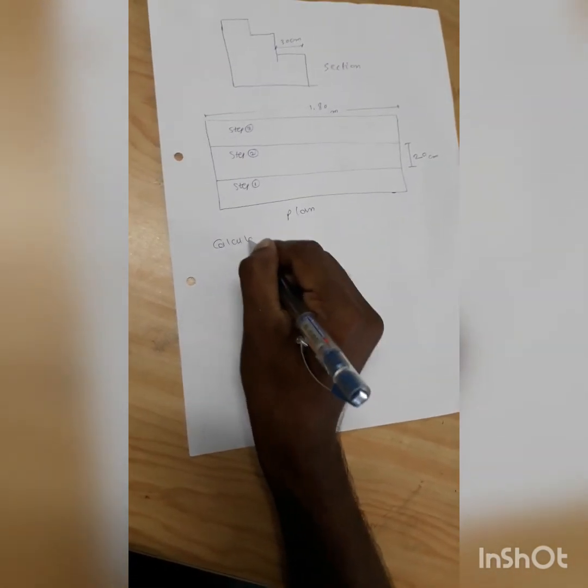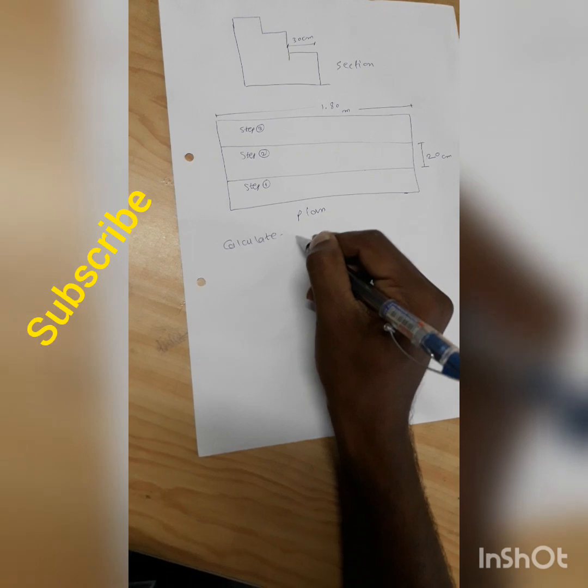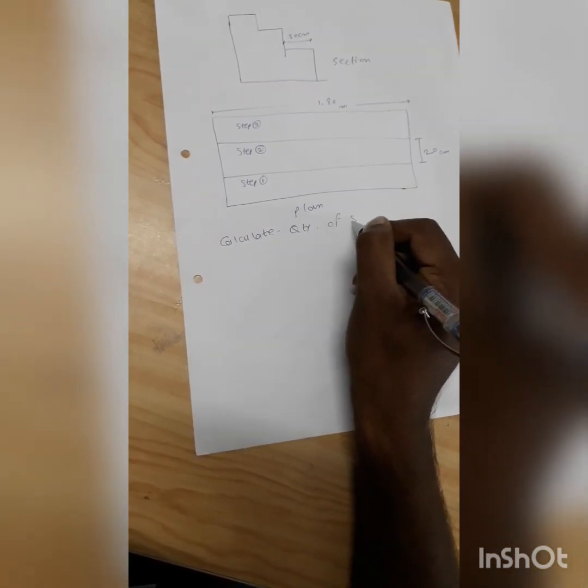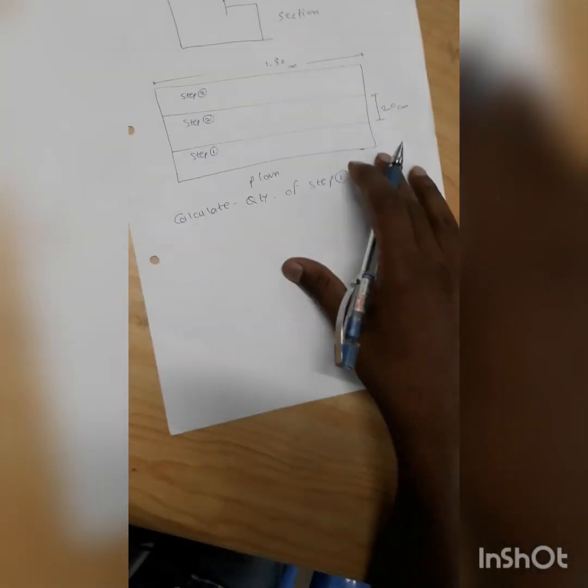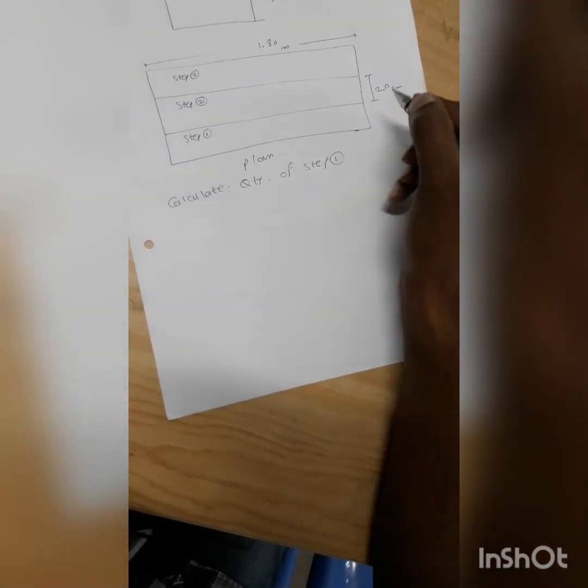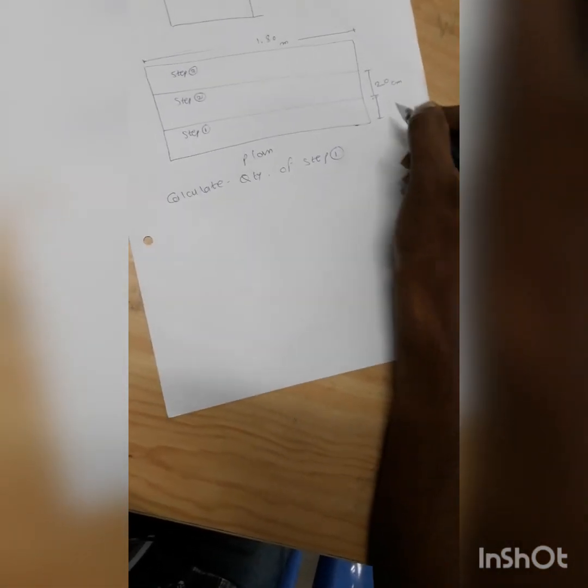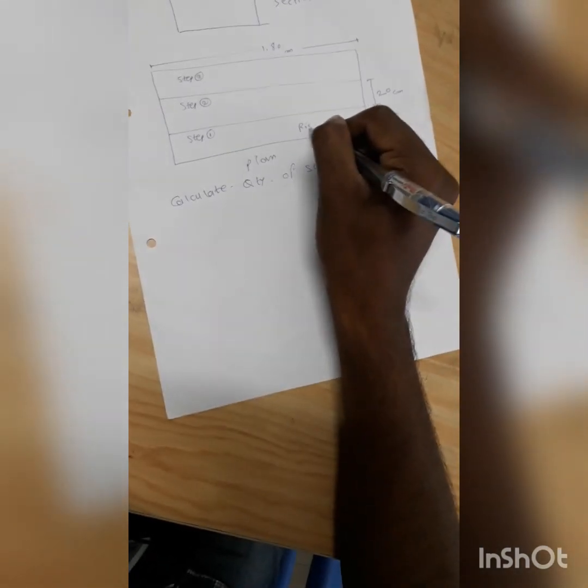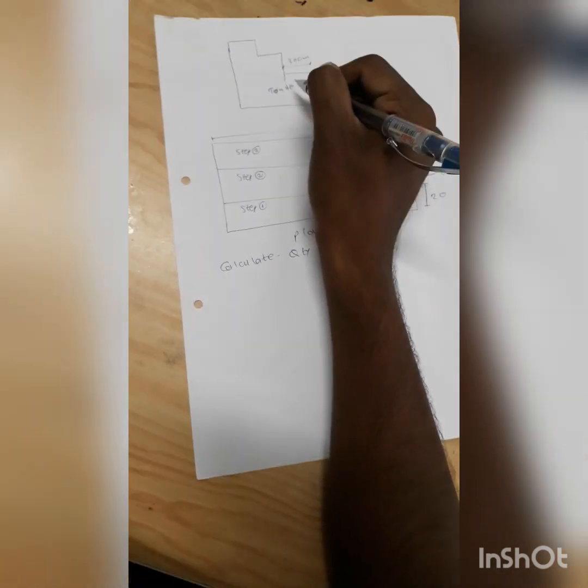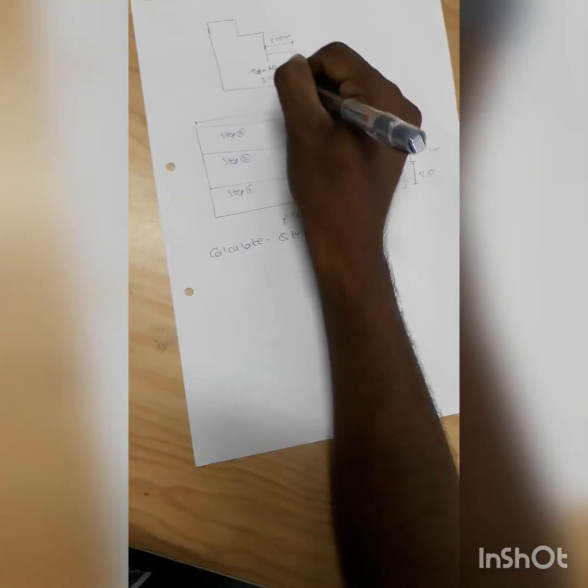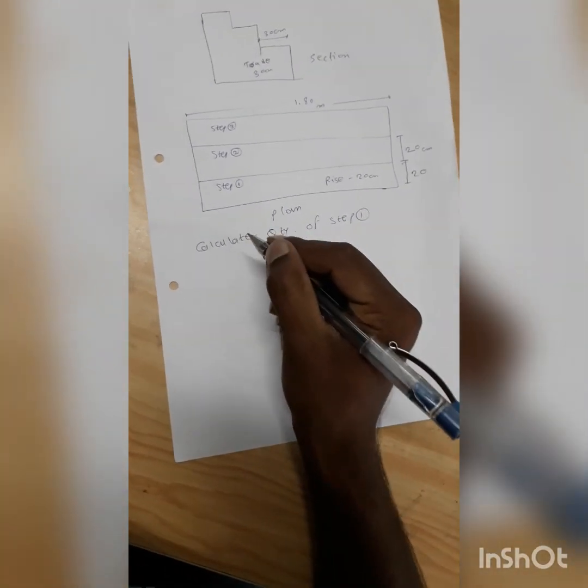They ask to calculate the quantity of step one. It was a two mark question without negative marking. In this question, the rise is 20 centimeters, tread is 30 centimeters, and we need to calculate the quantity in meter cube.